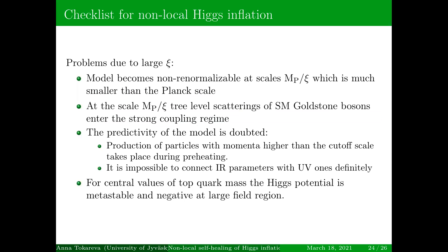Let me review which problems we had and which can be solved with non-locality. We had problems due to large Xi: the model becomes non-renormalizable at scales M_Planck over Xi, which is much smaller than the Planck scale. At this scale, tree-level scatterings of Goldstone bosons enter the strong coupling regime — this can be solved, at least for 2-to-2 scatterings, and other ones are expected to be more suppressed.